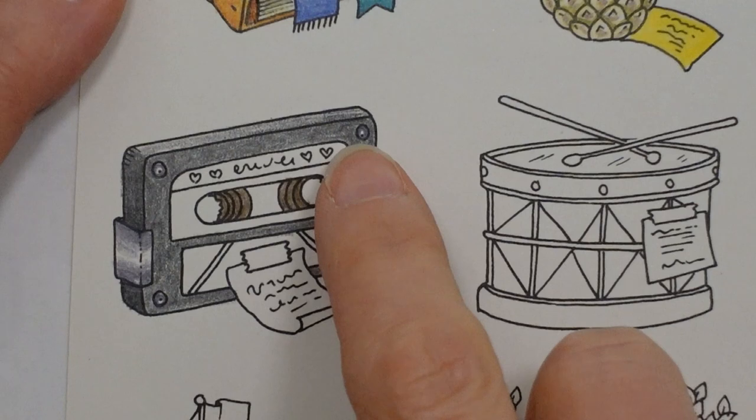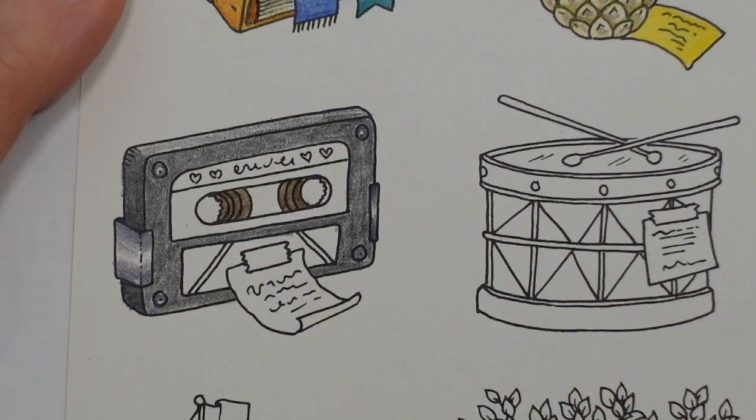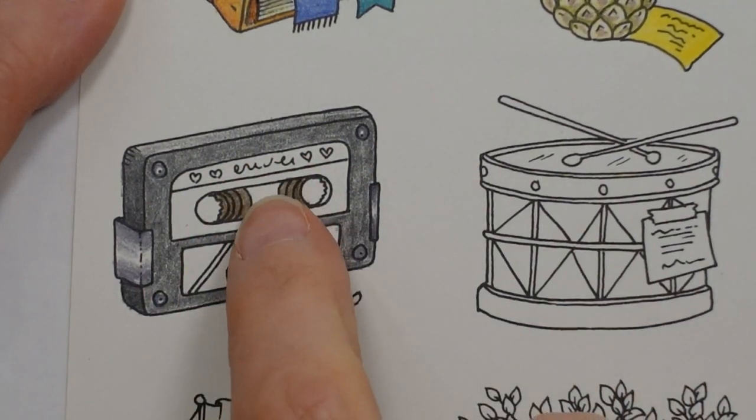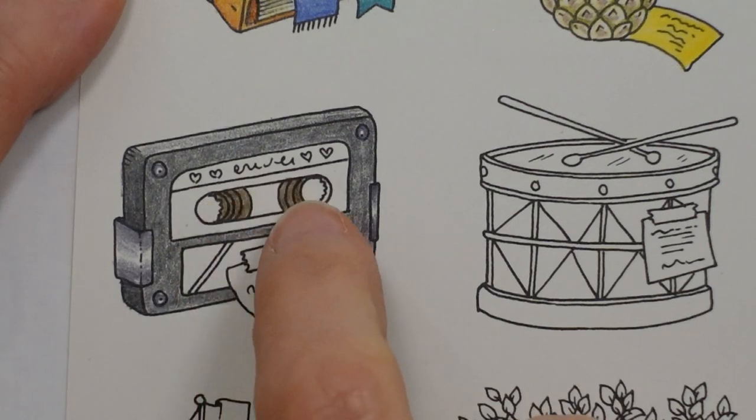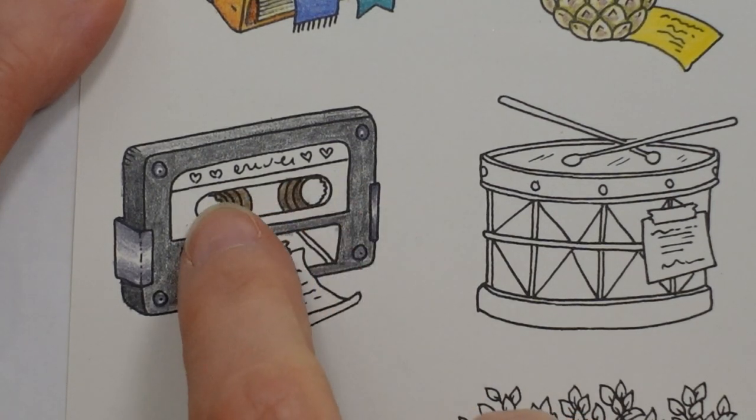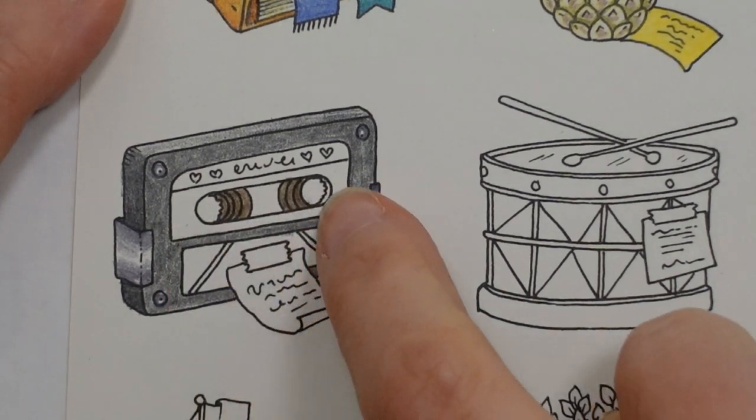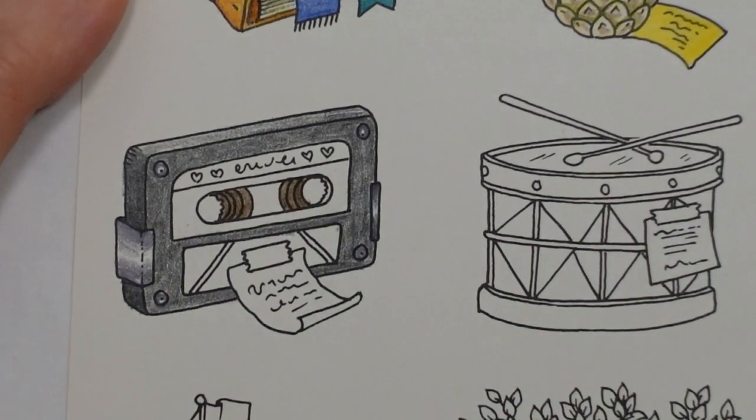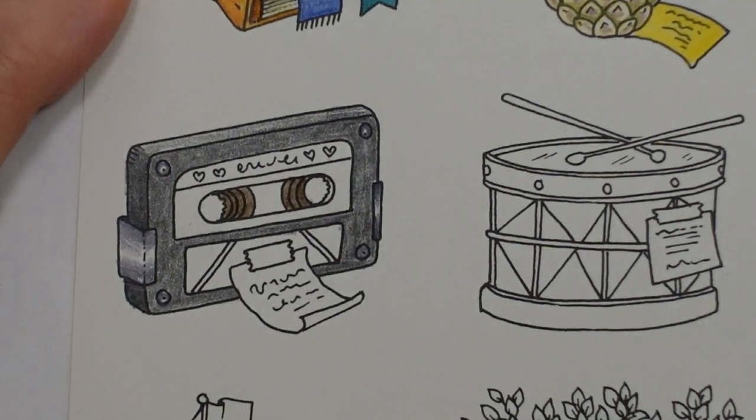That bit in the middle there that would be a gap as would those the holes there would be a plastic reel around here which we can see the edge of there not sure what colour to do that I think we'll think about that later we'll do the label.